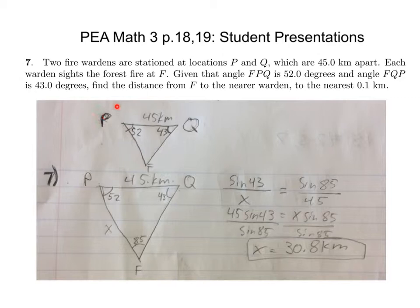Since you have these two angles, then you can subtract from 180 to get this angle. Then you do law of sines: sine 43 over x equals sine 85 over 45. And then you just proportion it out and solve for x, and you get 30.8 kilometers.